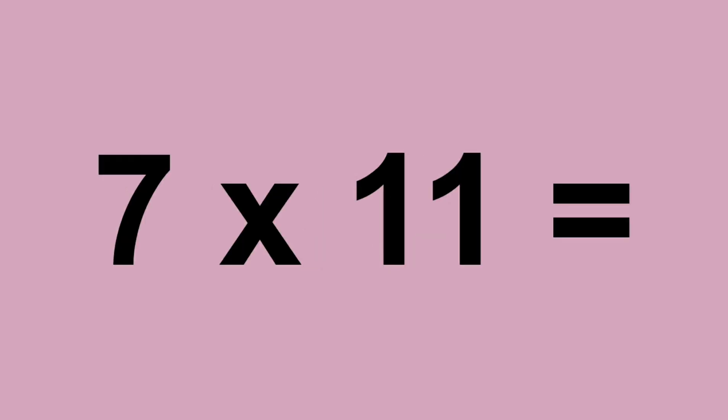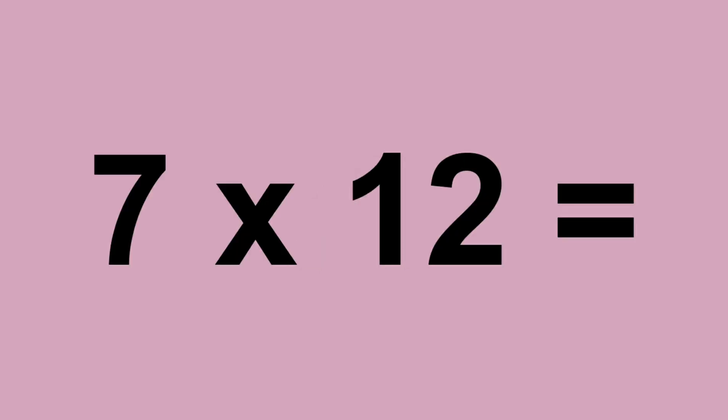7 times 11 equals 77. 7 times 12 equals 84.